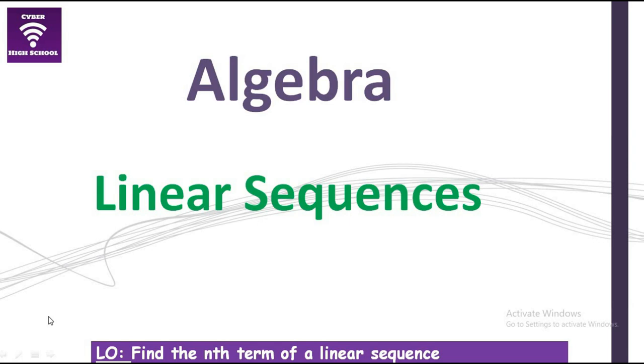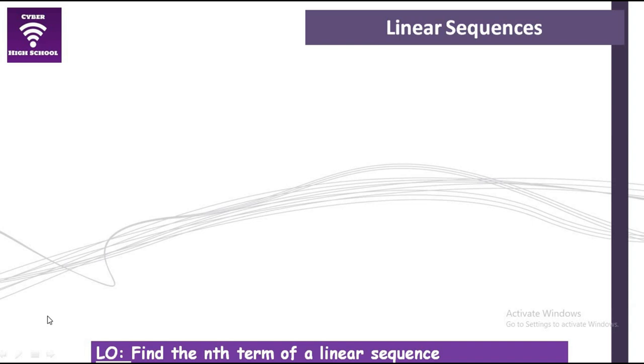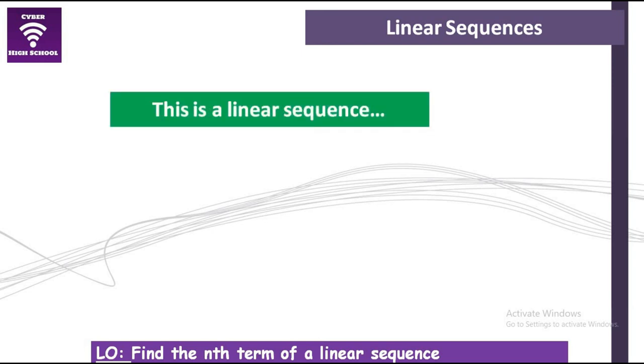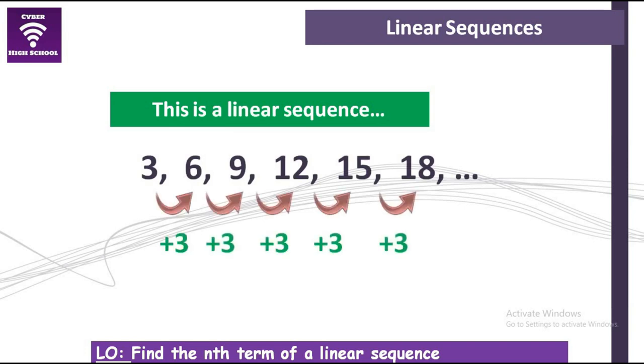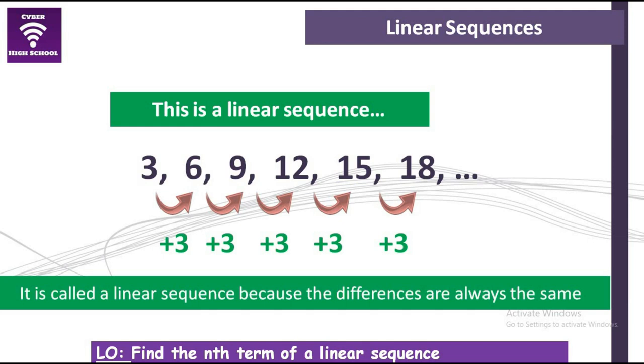Now, what is a sequence? That would be our first starting point. So a sequence is basically a pattern. When do we call a sequence linear? It is a linear sequence when the common difference is the same. We call it a linear sequence because the difference between the terms is always the same.